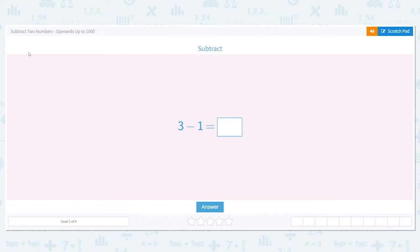So our first question says to subtract 3 minus 1. Now, if you look at it and you cannot answer the problem right away, use a strategy to help you. For example, I can draw a picture. If I start with 3, how many am I taking away? 1. Cross it out. How many do I have left? 2. So 3 minus 1 equals 2. Good job.